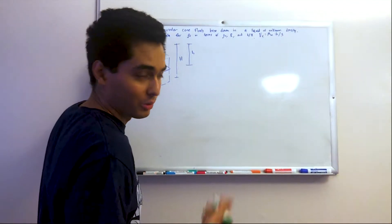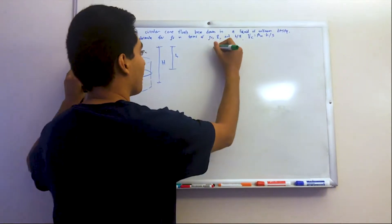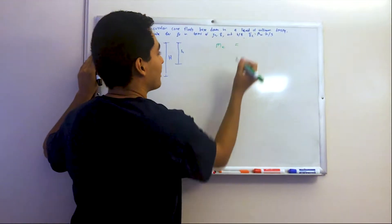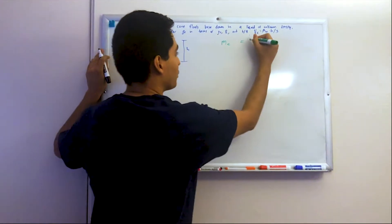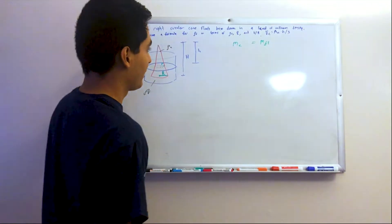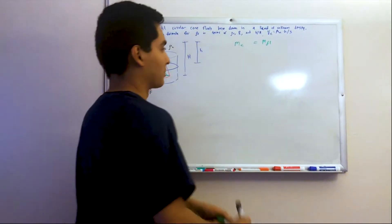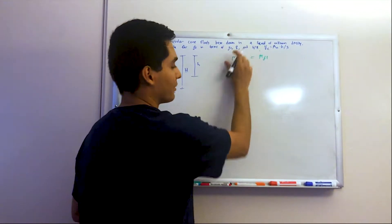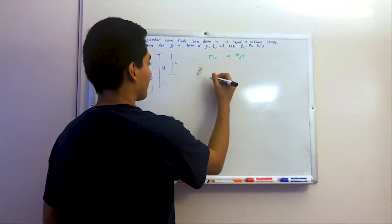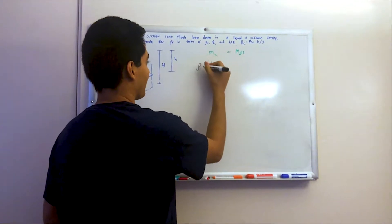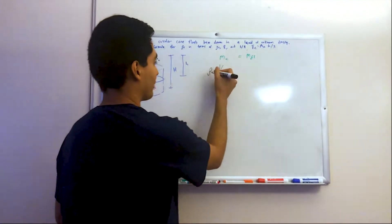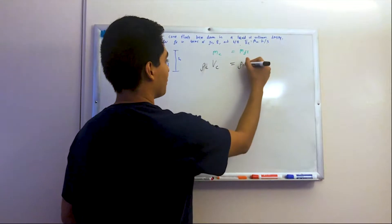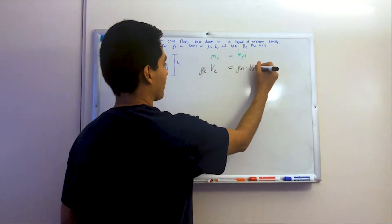So, rho of the fluid. If you recall Archimedes' principle, the mass of an object — in this case the cone — is going to be the same as the mass of the fluid displaced by that object. If density is mass over volume, then mass is density times volume. So mass of the cone is density of the cone times volume of the cone, and mass of the fluid is density of the fluid times volume of the fluid.